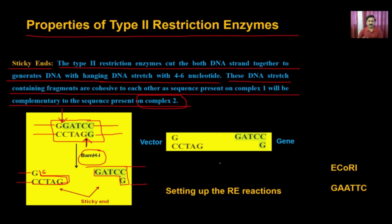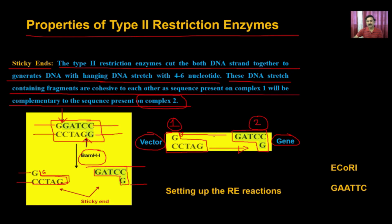The advantage of sticky ends is that if you digest both the vector and the gene of interest with BamHI, the vector generates one type of sticky end and the gene generates the complementary sticky end. When put together, they come closer and form a complex. However, there will be a nick that has to be sealed by another set of enzymes — the ligases — which we will discuss in due course.